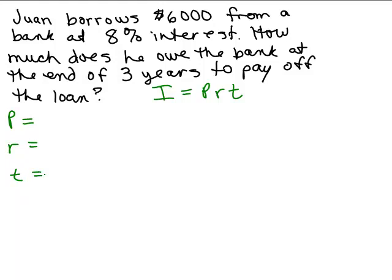So let's write down what the principal and the rate and the time are. The principal is the amount of money borrowed or lent or put in a bank, and that would be $6,000. The rate is 8%. Now, remember when you put in a percent in a formula, you need to change that to either 0.08 or 8 hundredths.